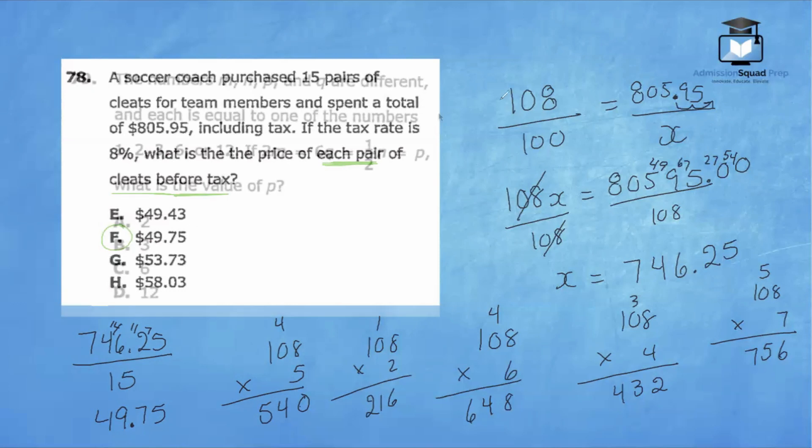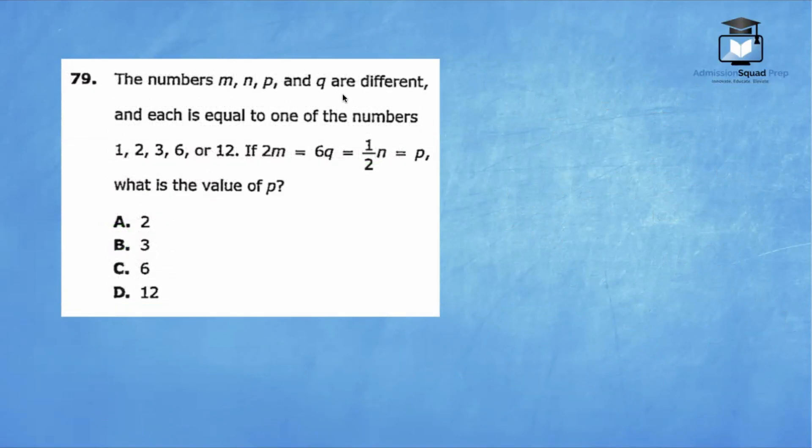The numbers M and P and Q are different, and each is equal to one of the numbers 1, 2, 3, 6, or 12. If 2M equals 6Q equals 1/2 N equals P, what's the value of P? I'll start off by taking a look at the behavior here.